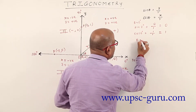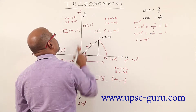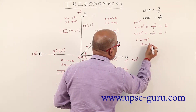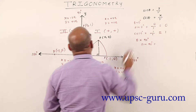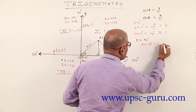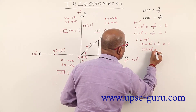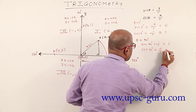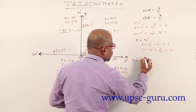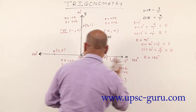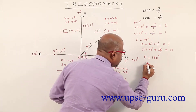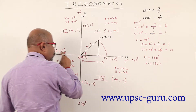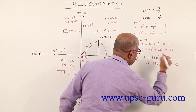When theta equals 90 degree, that means P is on positive direction of y-axis. Sin 90 degree equals y upon r — y equals 1 and r is 1, so we get 1. Cos 90 degree: x upon r — x is 0, r is 1, so 0 upon 1 is 0. Then when theta equals 180 degree, that is the negative direction of x-axis: sin 180 degree equals y upon r — y is 0, r is 1, answer is 0.